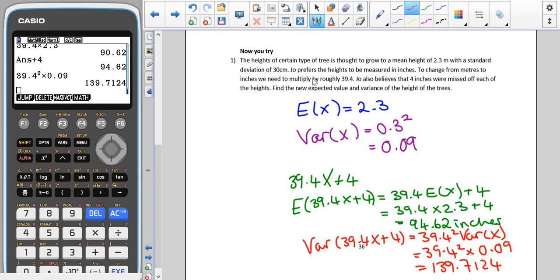So then we're told to change from meters to inches, we need to multiply by roughly 39.4. Joe also believes that four inches were missed off each of the heights. Find the new expected and variance of the heights of the trees. So we're finding 39.4X plus 4. When we do the expected value for 39.4X plus 4, that's the same as 39.4 times E of X plus 4. We know that E of X is 2.3, which ends up giving us an expected value of 94.62 inches.